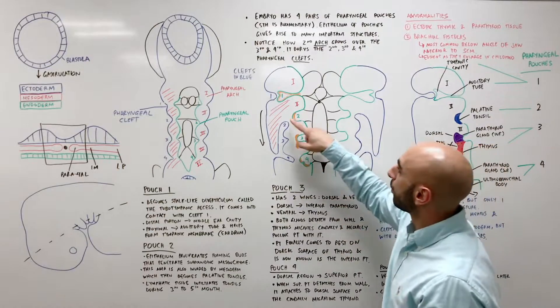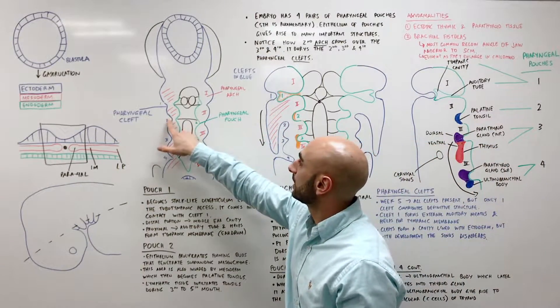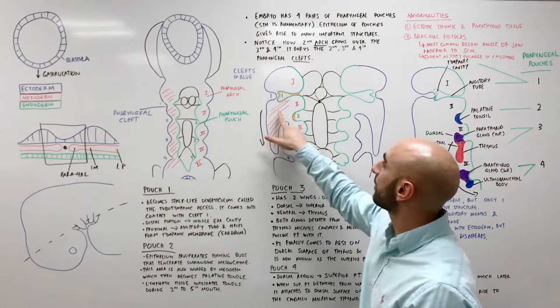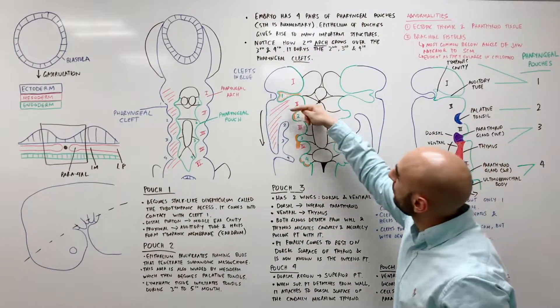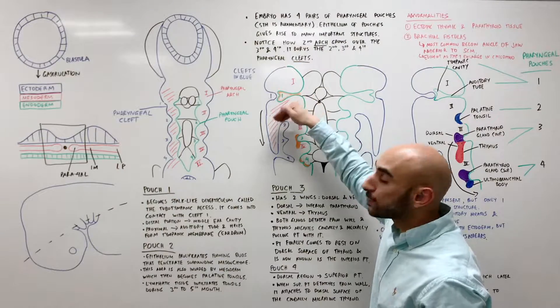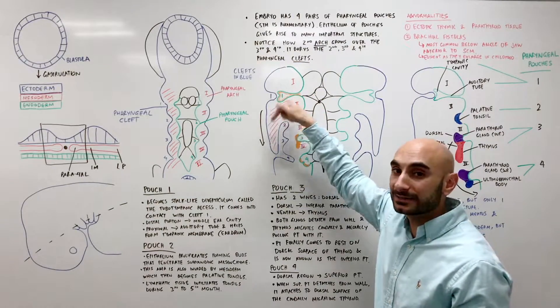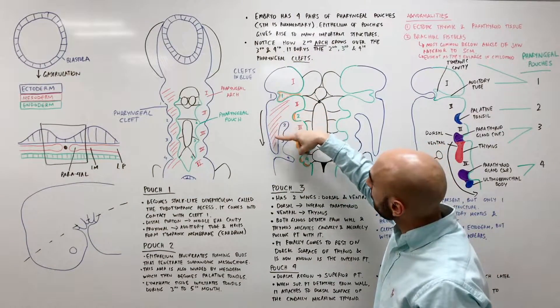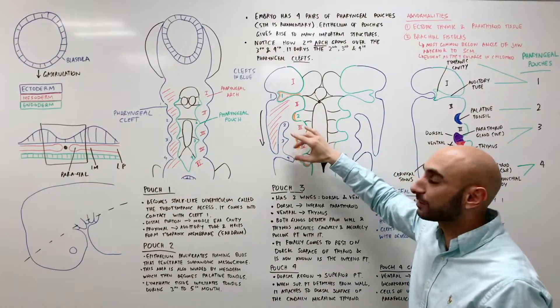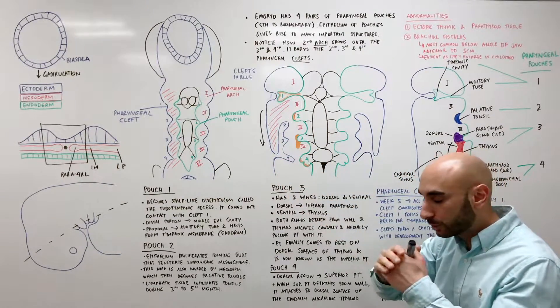So what happens over here, where the 2nd pharyngeal arch is, notice how it proliferates and grows inferiorly, caudally, down. Now, it grows until it completely covers the 2nd, 3rd and 4th cleft and it should obliterate it.